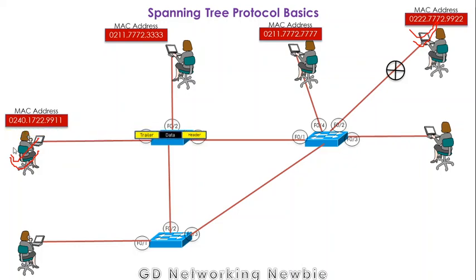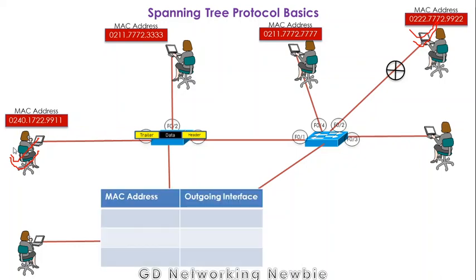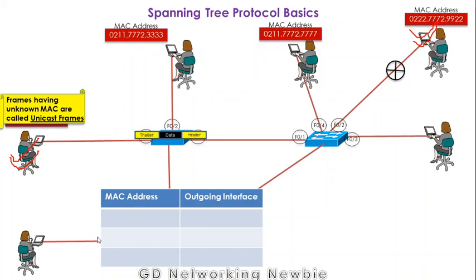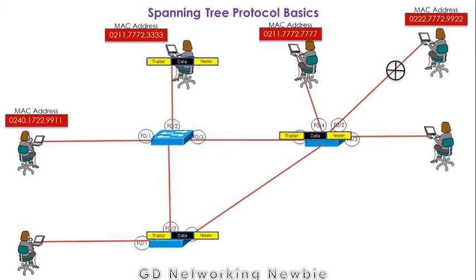The source user generates the frame and forwards it to the switch. The switch looks into its MAC table to find the port to forward to, but there is no entry. Such frames — where the destination MAC address is not in the MAC table — are called unknown unicast frames. Since there is no entry, the switch uses flooding and forwards the frame to all connected nodes except the one it received it from.